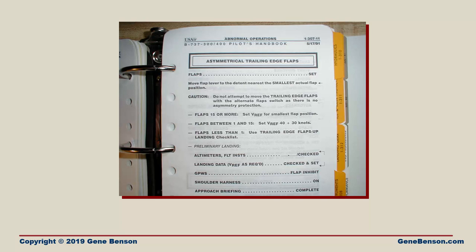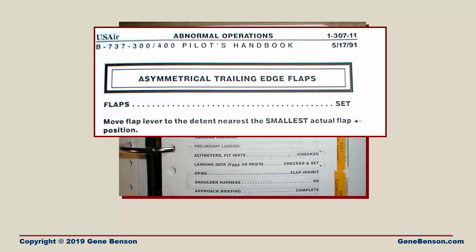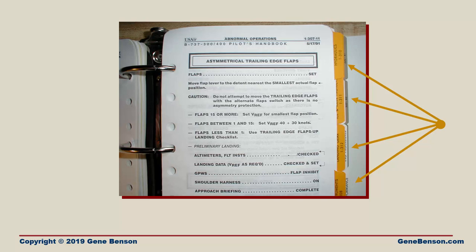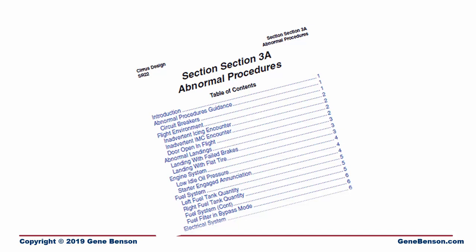Airlines have detailed procedures for just about everything that might arise. This is an excerpt from my old Boeing 737 manual — the section shown deals with asymmetrical flaps. Note that the tabs are amber to denote caution; emergency procedures had red tabs. Today, these checklists are all electronic. Most newer airplanes have an abnormal procedures section in their manuals, but if you are among the vast majority of general aviation pilots, you are flying an airplane that does not include recommended abnormal procedures.